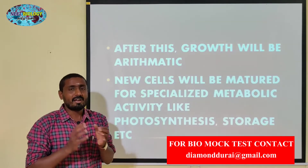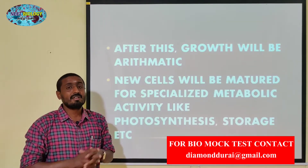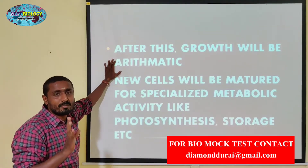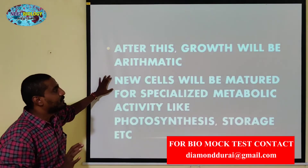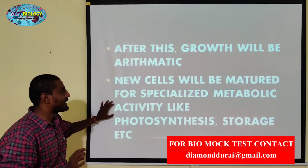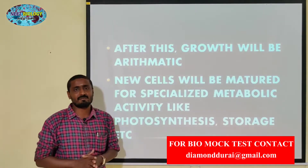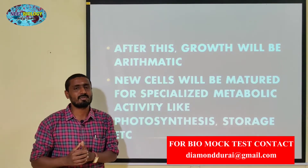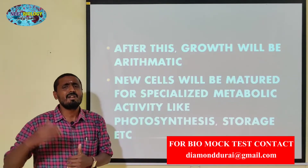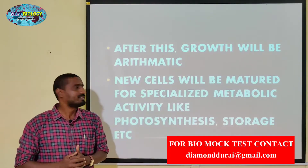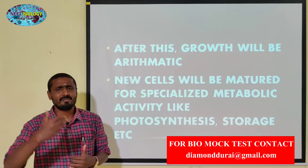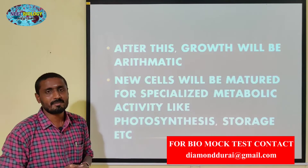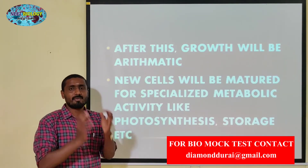Once the tips of the root and shoot have been formed, the growth will be arithmetic — it won't be geometric. New cells will be matured for specialized metabolic activity like photosynthesis, storage, etc. The shoot tip will show arithmetic growth. Every cell will be formed for storage and other functions. So the plant is called embryonic growth.